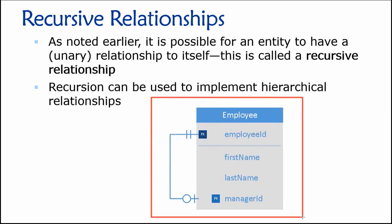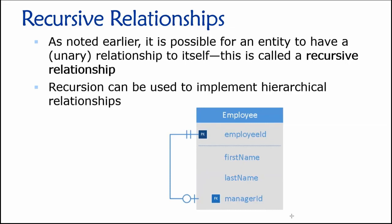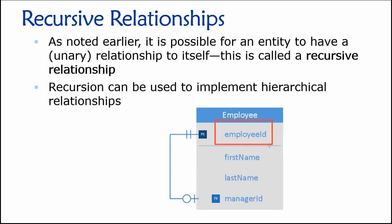Consider this design here. We have an employee table, and the primary key of the employee table is employee ID. Down here we have a foreign key named manager ID. This is the key insight: manager IDs are employee IDs. Every manager in a company is also an employee. So what we're doing is connecting each employee ID to at most one manager ID, indicating the person who is that employee's manager.